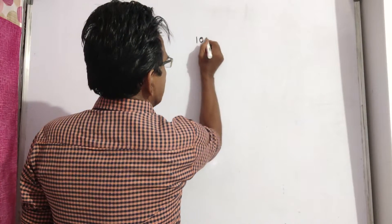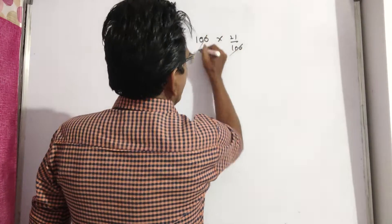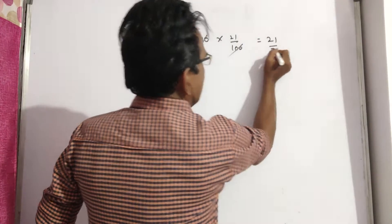Here the reduction is 21%. What is 21% of 100? That is equal to Rs. 21. This is the reduction.